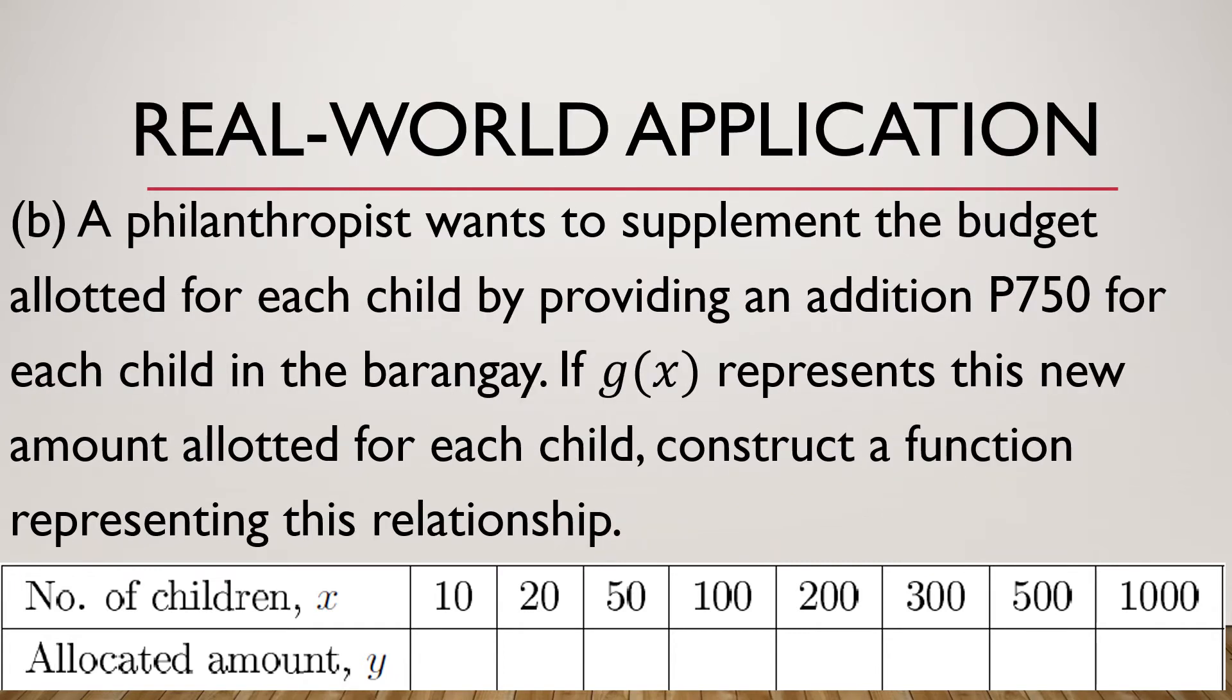In this second problem, this is a continuation of the first problem. A philanthropist wants to supplement the budget allotted for each child by providing an additional 750 for each child in the barangay. So we will let G(x) represent this new amount allotted for each child. We have to construct a function representing this relationship.